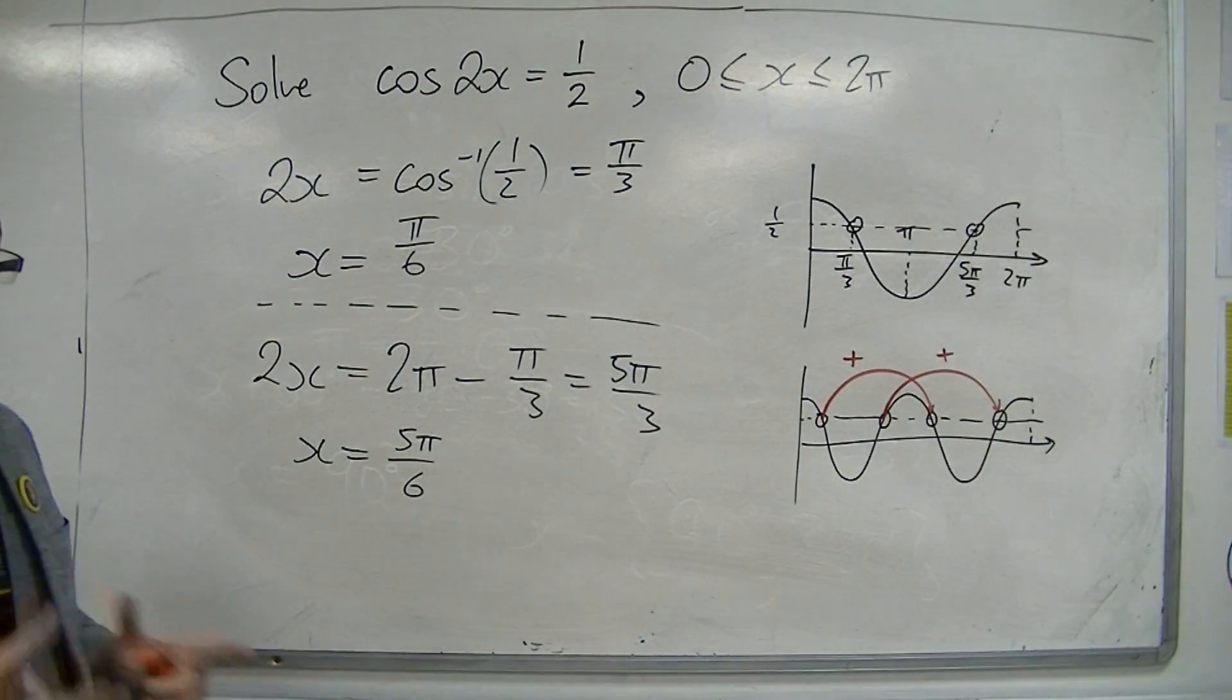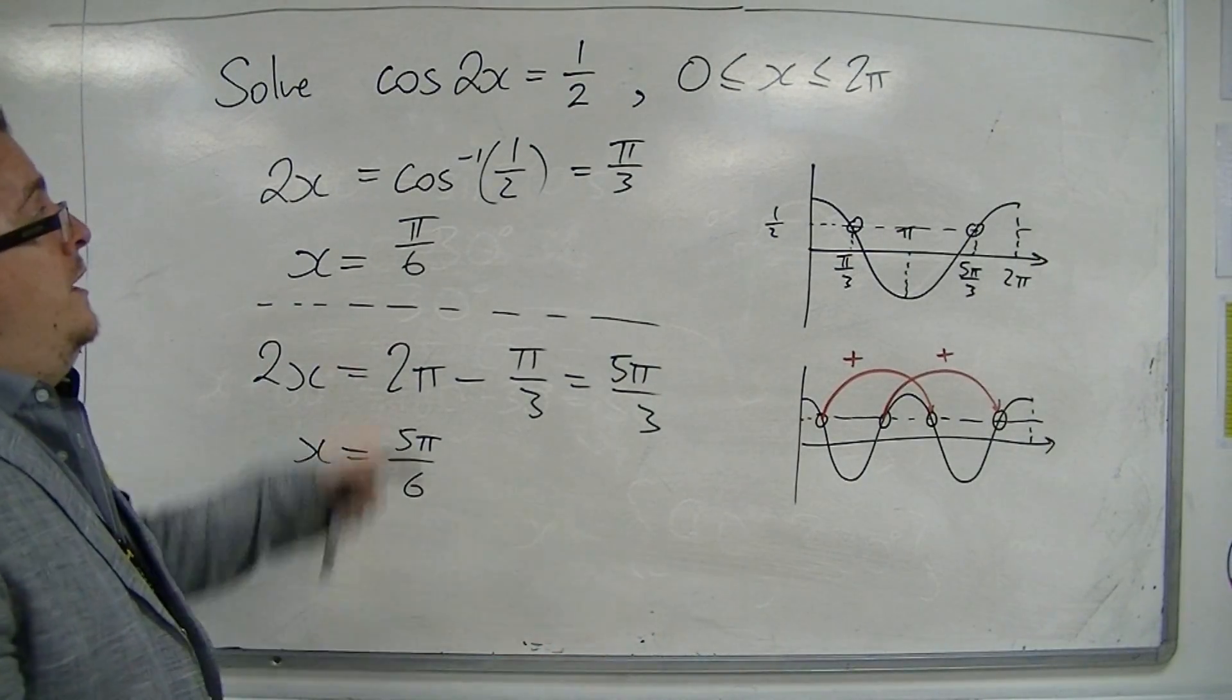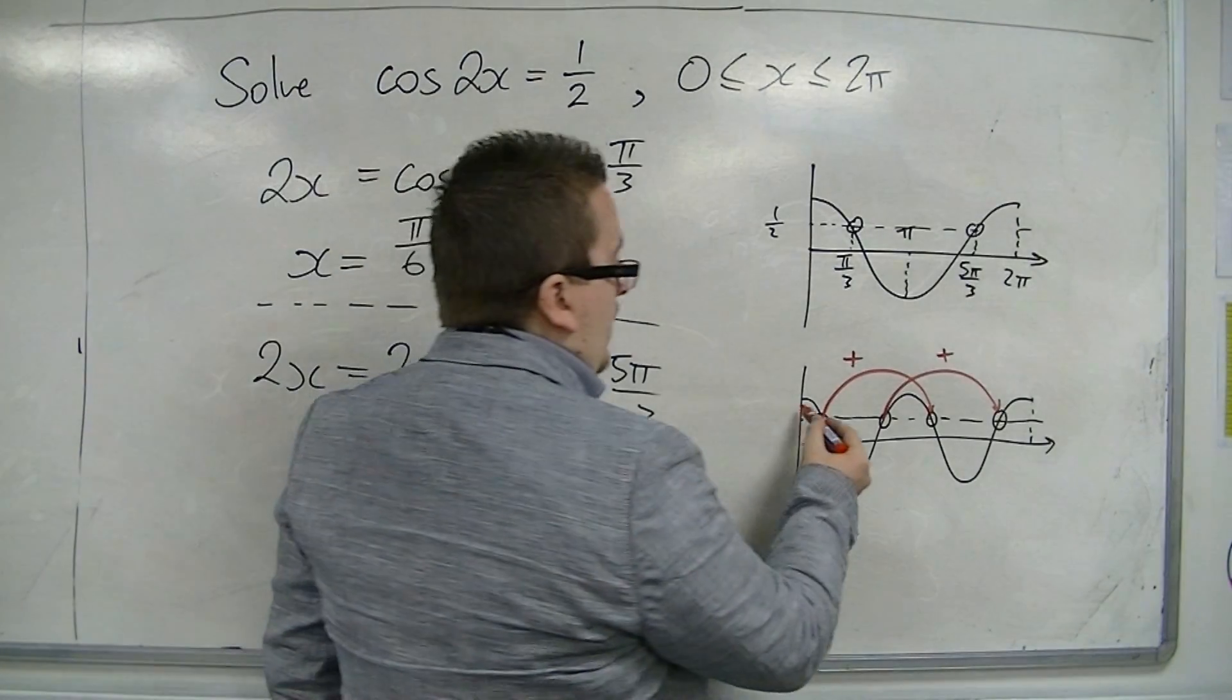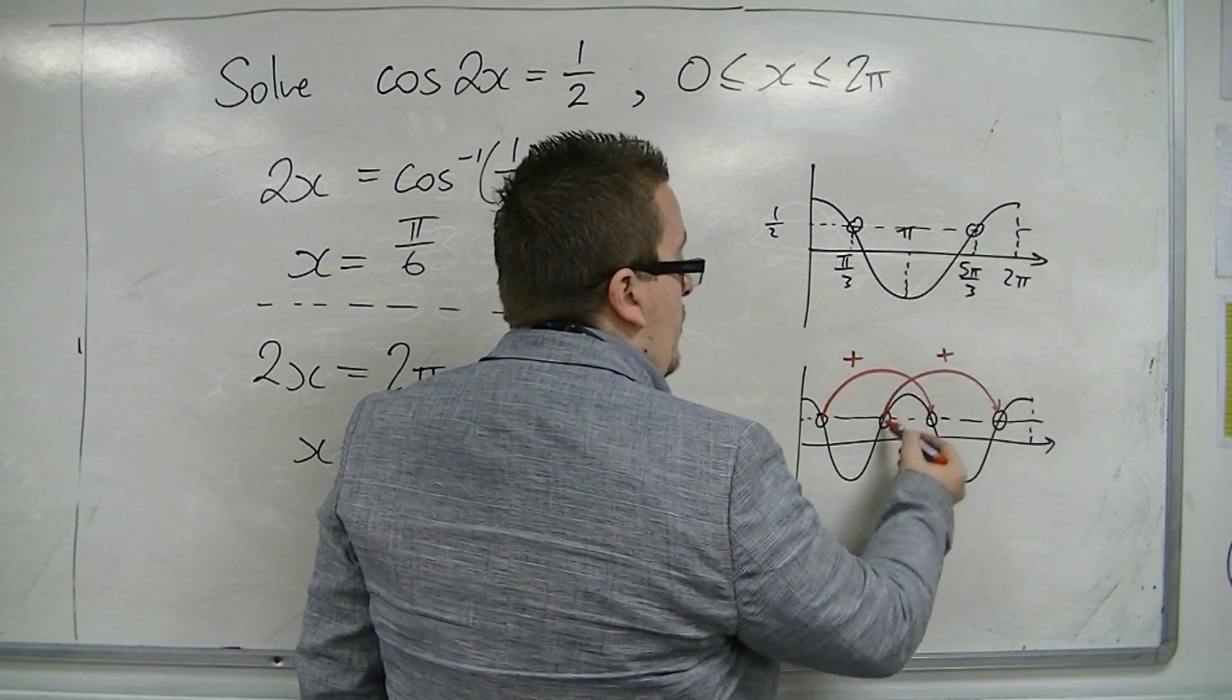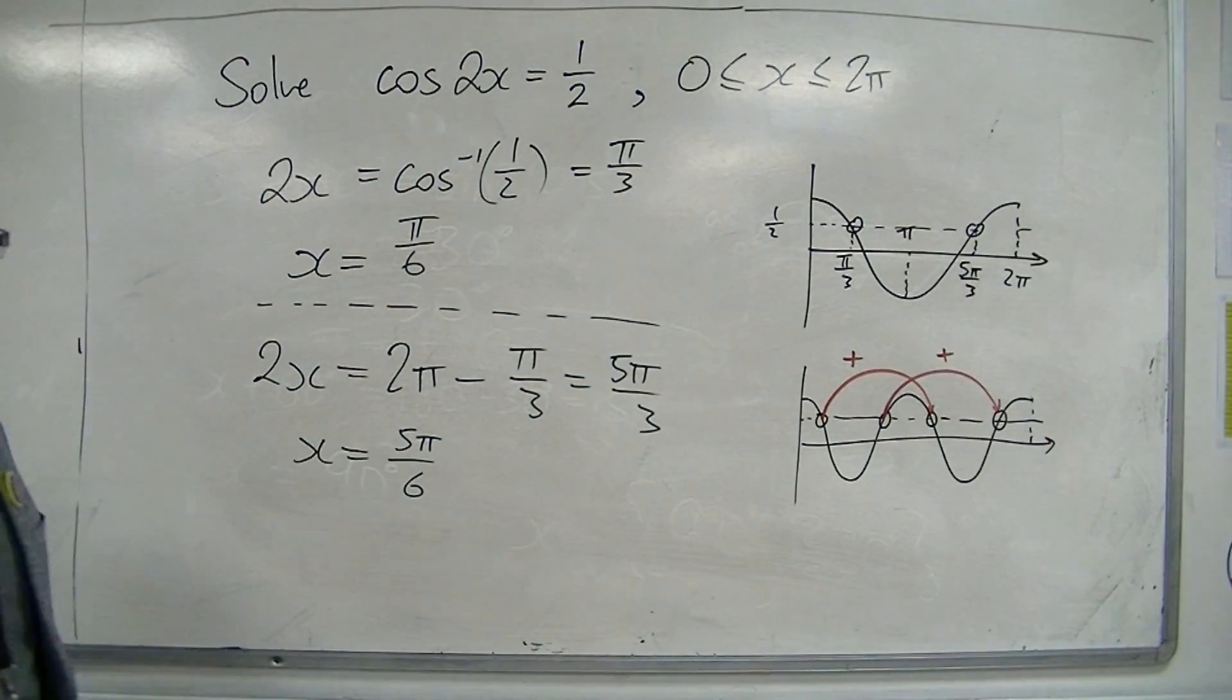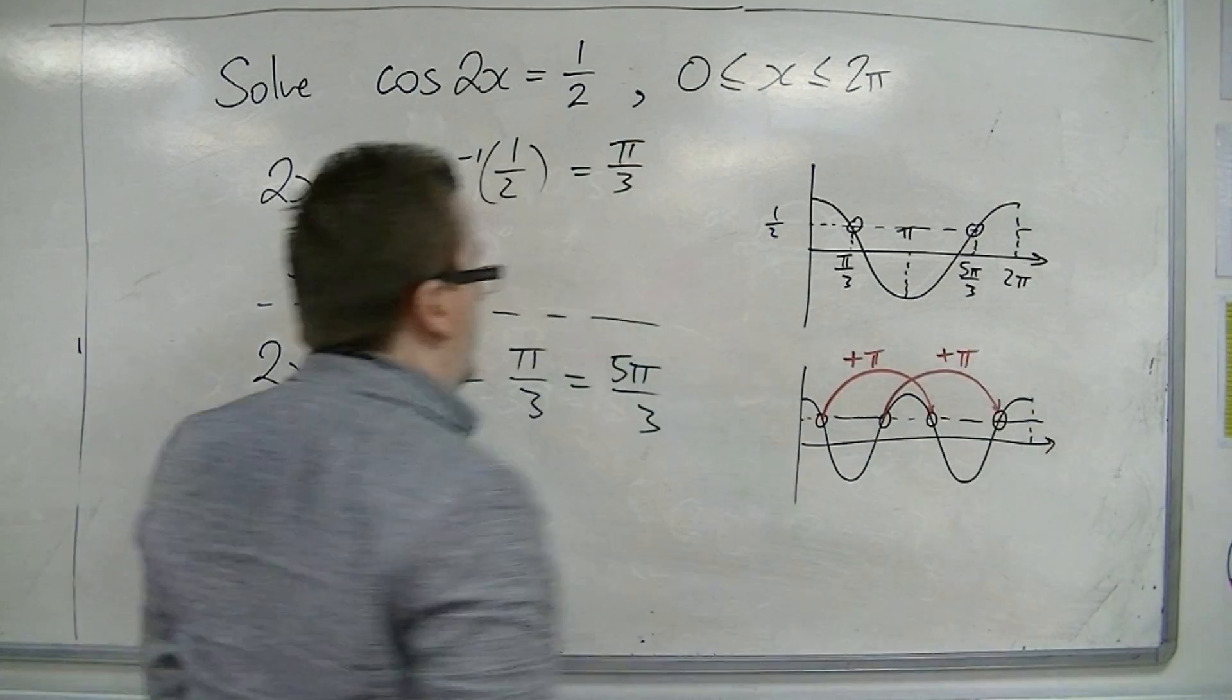The amount that I need to add is the new period of cos 2x. Cos 2x has a period of pi. So I need to add pi to both of my solutions.